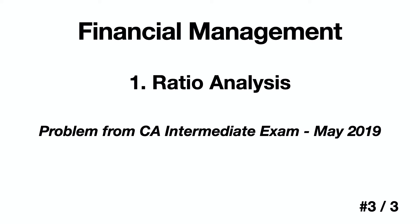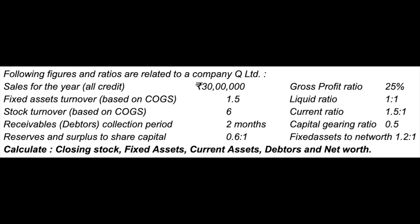The ratio analysis problem I'm going to explain is from May 2019. The task is to calculate missing figures using given ratios. The problem provides information about sales, gross profit ratio, liquid ratio, current ratio, closing stock, fixed assets, current assets, debtors, and net worth.